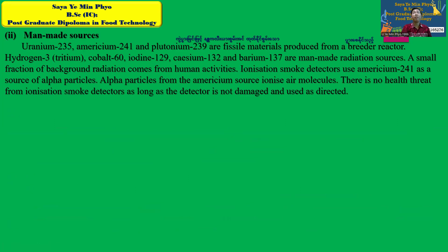A small fraction of background radiation comes from ground radiation. Sources include hydrogen-3 and carbon isotopes. There is no significant threat from ionization smoke detectors as long as the detector is not damaged.